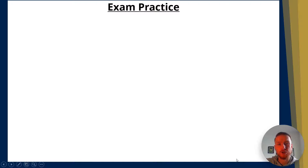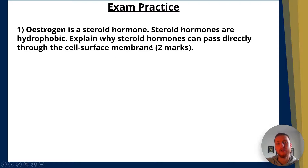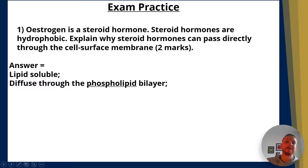Let's look at how this can come up in the exam. Question one: Estrogen is a steroid hormone. Steroid hormones are hydrophobic. Explain why steroid hormones can pass directly through the cell surface membrane — worth two marks. The answer: one mark for saying estrogen is lipid soluble; second mark for saying it can therefore diffuse directly through the phospholipid bilayer. Note that 'phospholipid bilayer' must be included to get the mark.